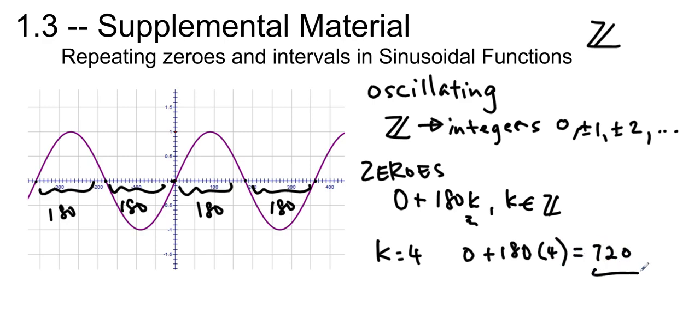So I know that at 720 degrees, the sine is actually going to be zero, so sine of 720 is zero. And I can do that with any integer, and I'm going to find another zero. So that's why it's zero plus, that's the starting point, the 180, how often it repeats, times k, which just makes it repeat.